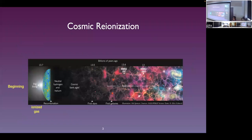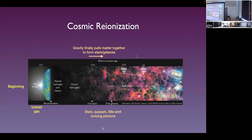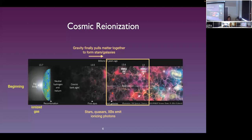Let me bring everyone on the same page by showing the history of the universe. We know our universe starts with a Big Bang, and in the very first 400,000 years the universe is very hot with gas in a mostly ionized state. As the universe expands, the gas cools down and protons combine with electrons to form cold neutral hydrogen — our universe enters the so-called dark ages. As time passes, gravity pulls matter together to form the first luminous objects like stars and galaxies, which emit ionizing photons to ionize the gas again, bringing about the second epoch where the universe is mostly ionized — hence the term cosmic reionization.